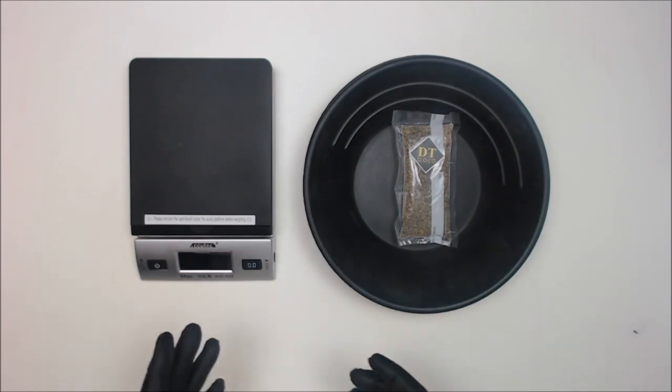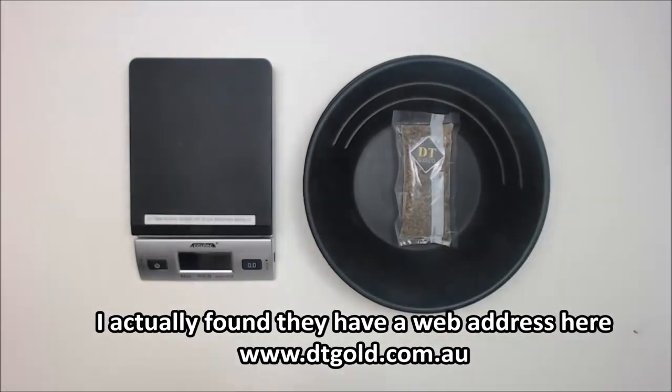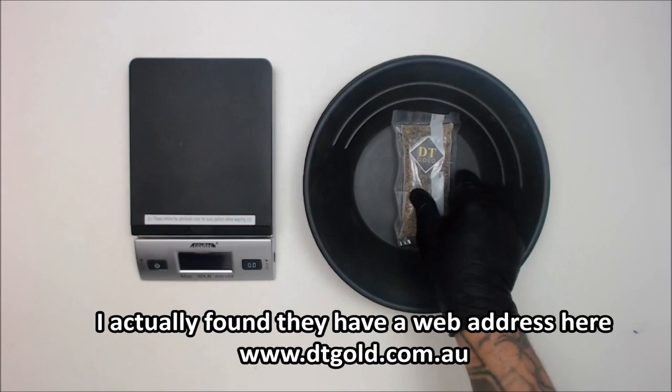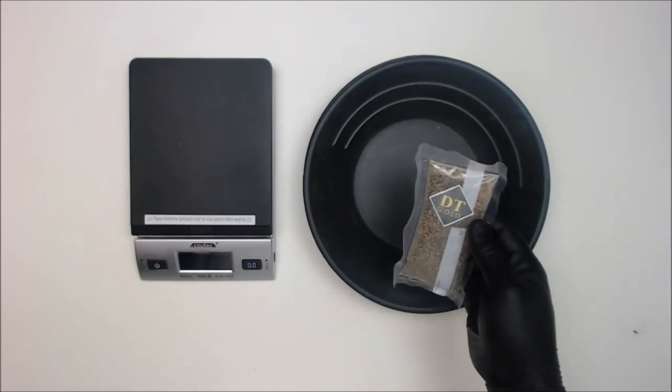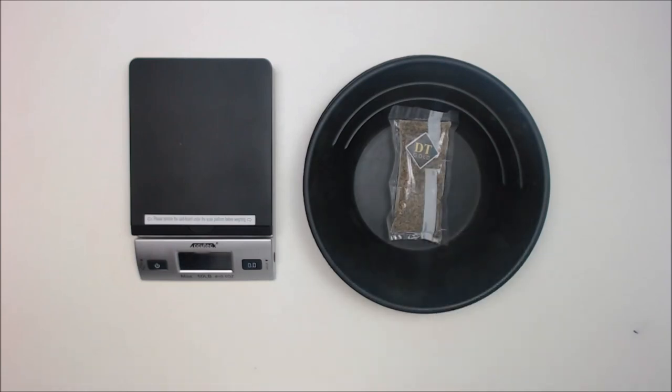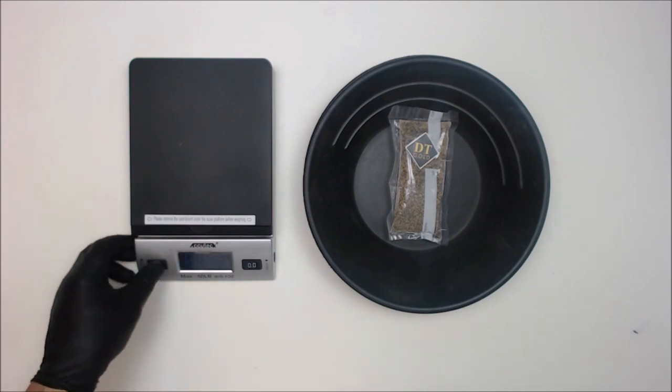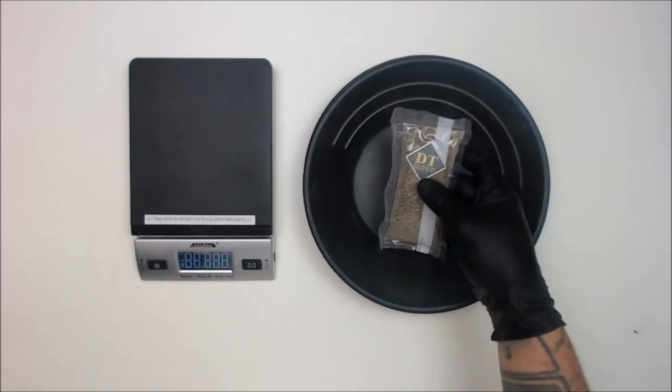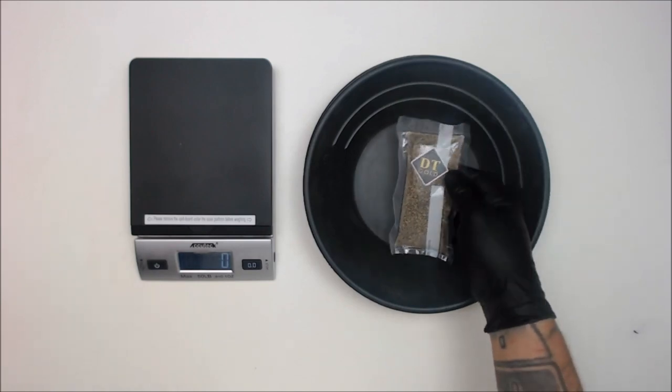This one is from DT Gold. Their website is dt-gold-australia.myshopify.com, not a very easy name to remember, so look below for a link. This is their 200 gram high concentrate bag, the only bag they ship overseas. I didn't have it all set up to order from Australia, so I had somebody order it for me.